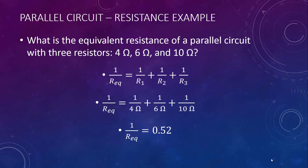This is not the answer. The question doesn't ask for the reciprocal of the equivalent resistance — we want the equivalent resistance itself. You could use the reciprocal button on your calculator (1 divided by x), or put 0.52 over 1 and cross multiply and divide. Either way, you'll find that the equivalent resistance is 1.94 ohms.